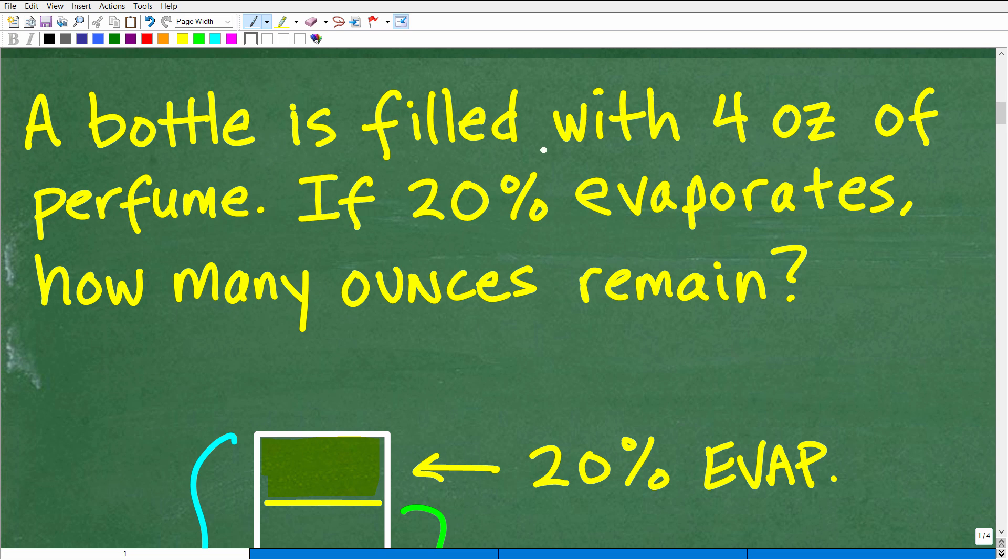So here again, we have a bottle, and it's filled with four ounces of perfume. And I'm being told that 20% evaporates. What does this word evaporates mean? Well, it's like if you have a puddle of water after some rain, the sun comes out, and then that water just kind of dries up. It just evaporates away.